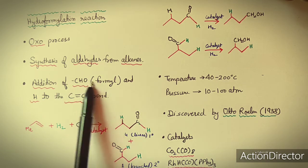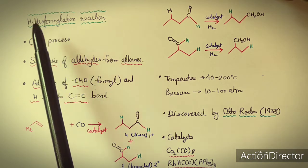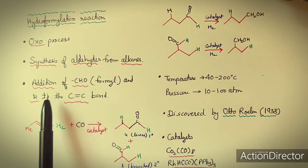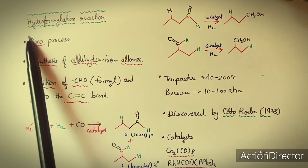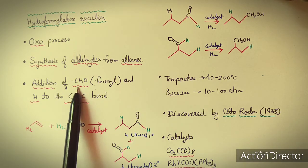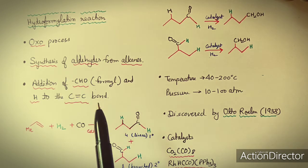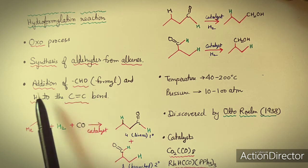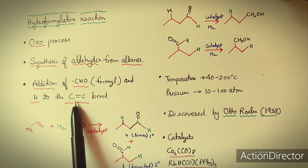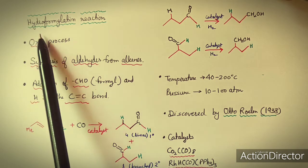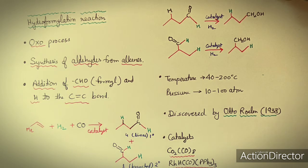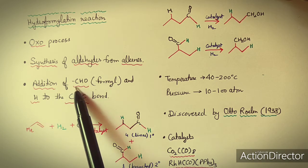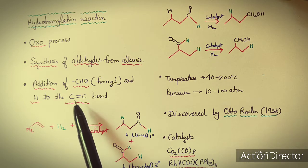Why is it called hydroformylation? Because there is addition of a hydro group (H) and a formyl group (CHO) to the C=C double bond. So hydroformylation means addition of hydrogen and a formyl group to olefinic compounds.